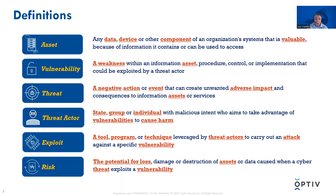An exploit is a tool, program, or technique leveraged by threat actors to carry out an attack against a specific vulnerability — for example, someone sending an accomplice to distract me so they can break into my car, or following a YouTube video on hotwiring. Risk is the potential for loss, damage, or destruction of assets or data caused when a cyber threat exploits a vulnerability. We also commonly define risk as the product of probability and impact — that is, how likely is this to occur?